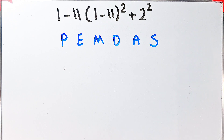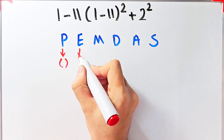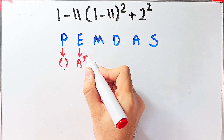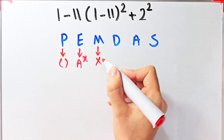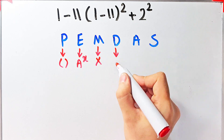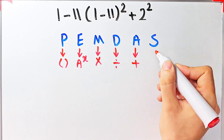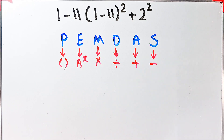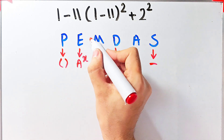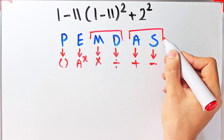In this rule: P stands for Parentheses, E stands for Exponent, M stands for Multiplication, D stands for Division, A stands for Addition, and S stands for Subtraction. Multiplication and division have the same level of priority, and addition and subtraction also have the same level of priority.